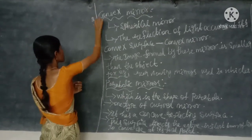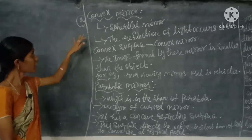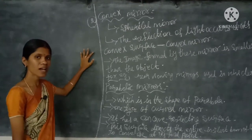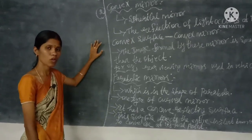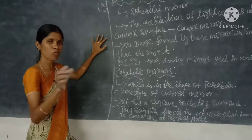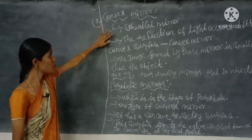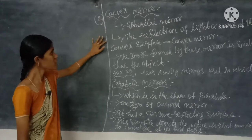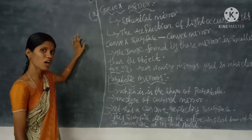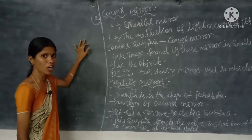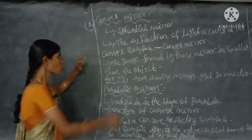The second example of a spherical mirror is the convex mirror. Convex mirror means this mirror is thin at the edges and thick in the middle. It is one type of spherical mirror. In the case of a convex mirror, the reflection of light occurs at its convex surface, whereas in the case of a concave mirror, the reflection occurs at the concave surface.